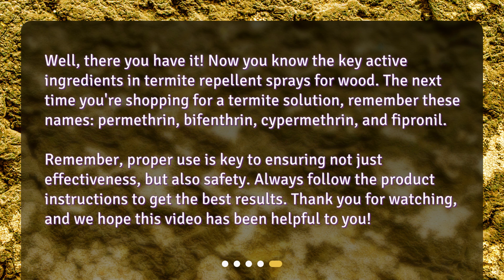Well, there you have it. Now you know the key active ingredients in termite repellent sprays for wood. The next time you're shopping for a termite solution, remember these names — permethrin, bifenthrin, cypermethrin, and fipronil. Remember, proper use is key to ensuring not just effectiveness, but also safety. Always follow the product instructions to get the best results. Thank you for watching, and we hope this video has been helpful to you.